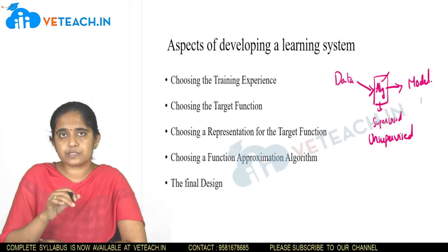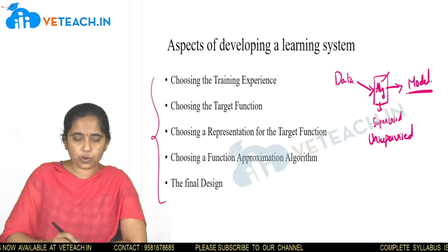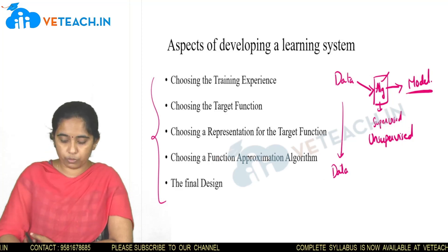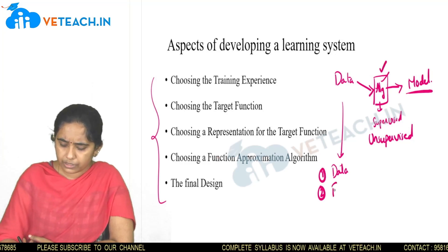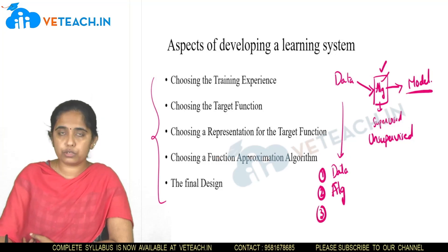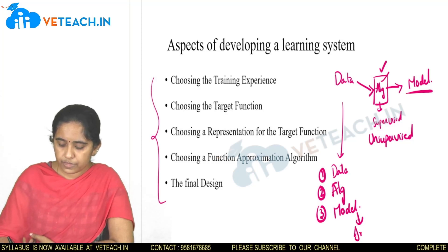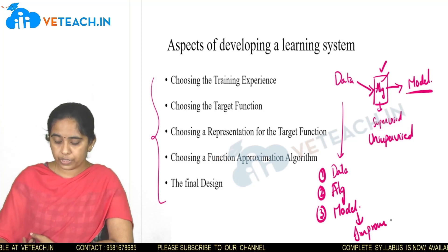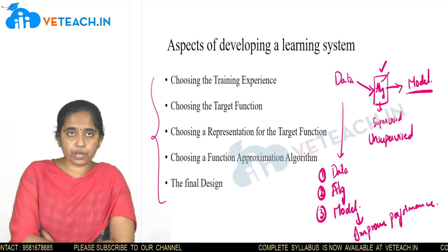Today we'll discuss the major concepts and important aspects required to develop this model. The basic steps are: first, I require some data or experience; second, I require some algorithm to train the data; and after training, I get a model. Beyond that, I may want to improve the performance, since the model generated earlier may not always give a better outcome.